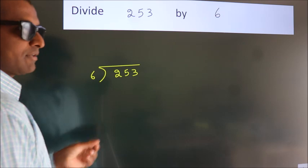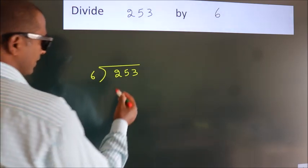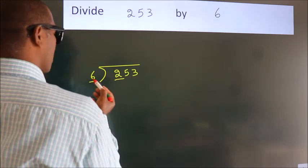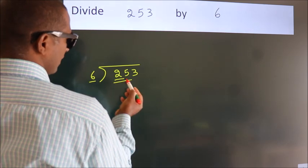This is step 1. Next, here we have 2. Here 6. 2 is smaller than 6. So, we should take 2 numbers: 25.